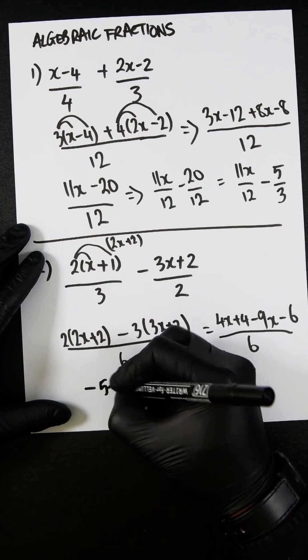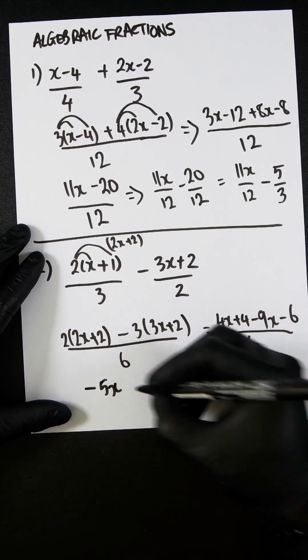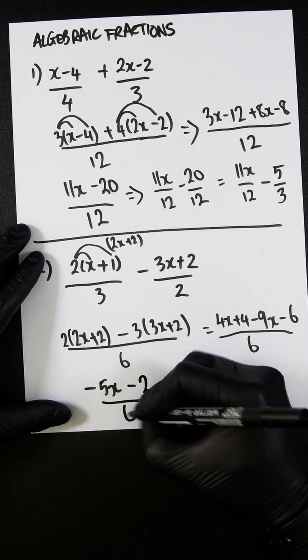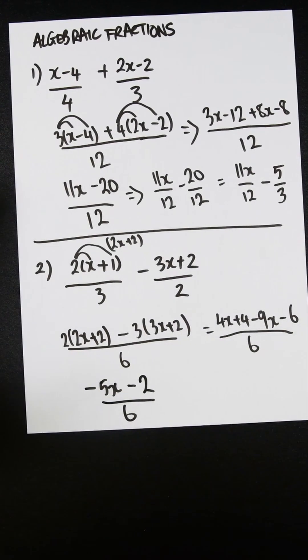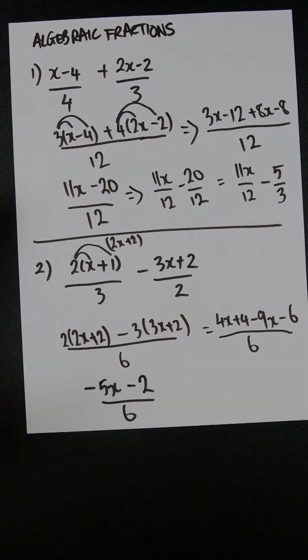We can now clean up. So we've got 4x minus 9x, that's minus 5x. And we've got 4 minus 6, which is minus 2, all divided by 6. And you know, right there, we're kind of done.